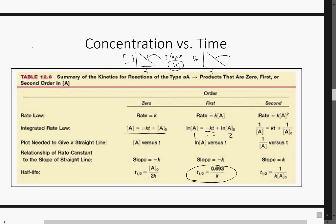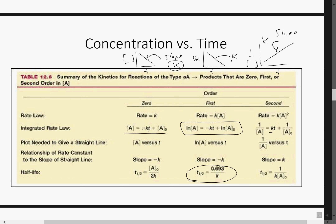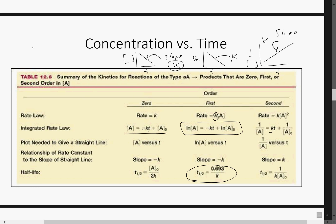The slope on the first-order graph only represents K. This reaction won't indicate rate — it only gives concentrations. For second order, we have time versus one over concentration, which is a positive slope. Again, the slope of this equals K. These K values are the same K. This solves for initial rate. If you want a concentration at time T, you would use one of these integrated rate law equations.